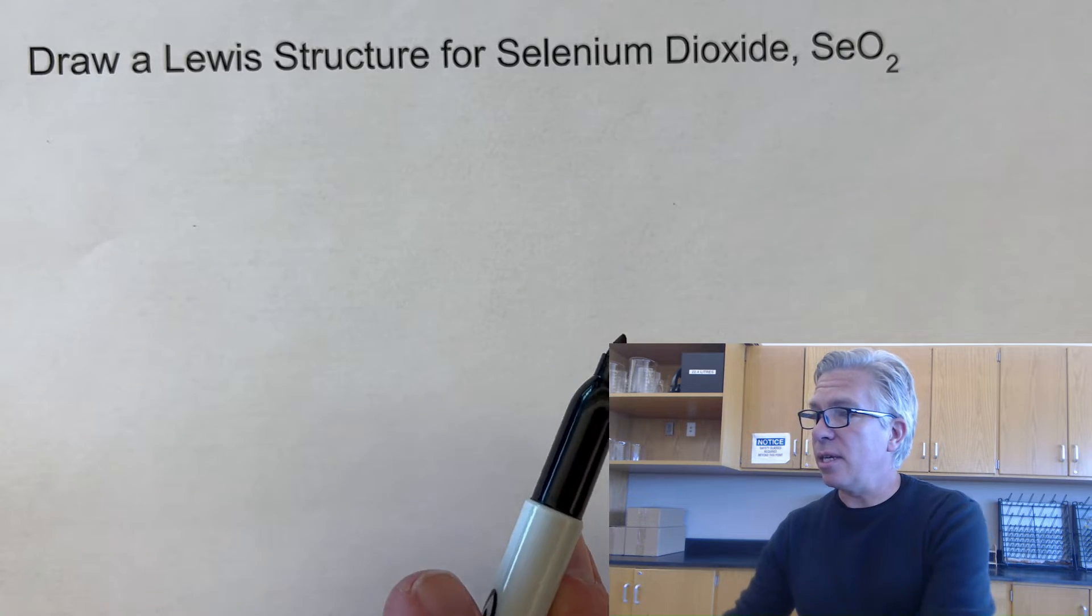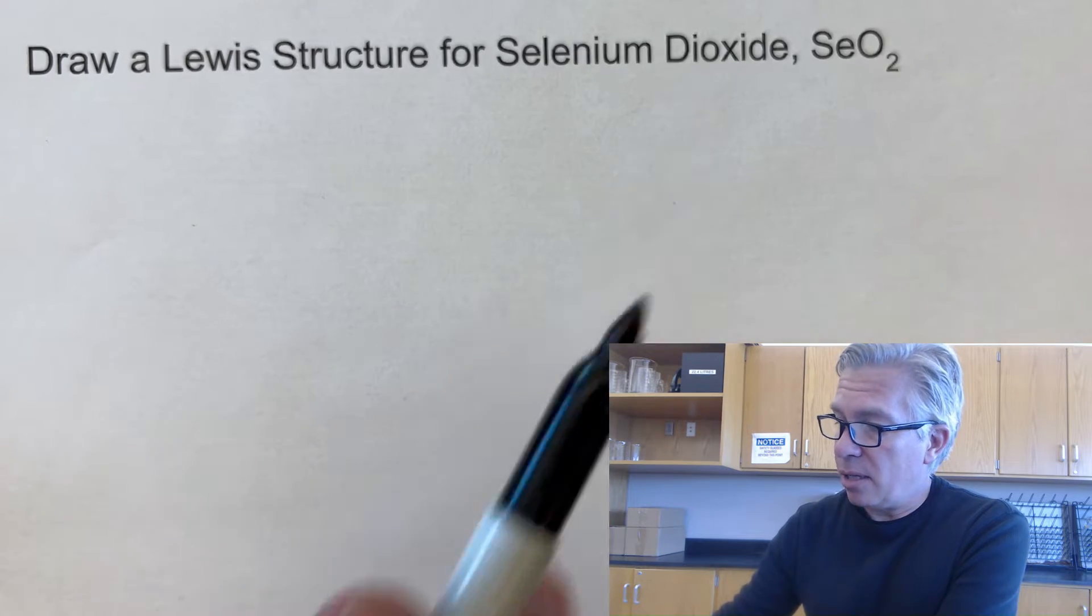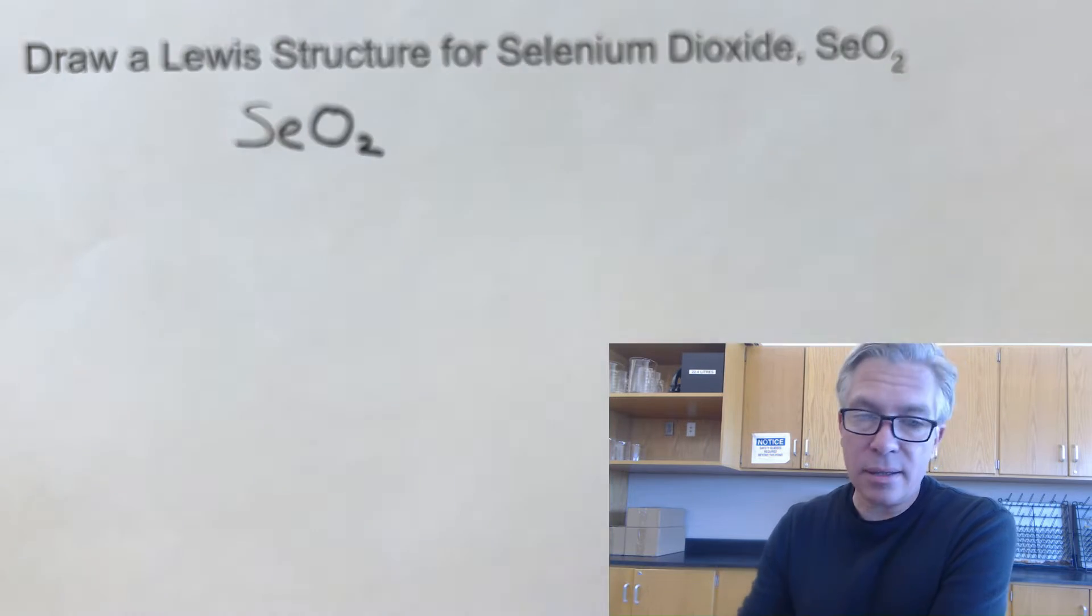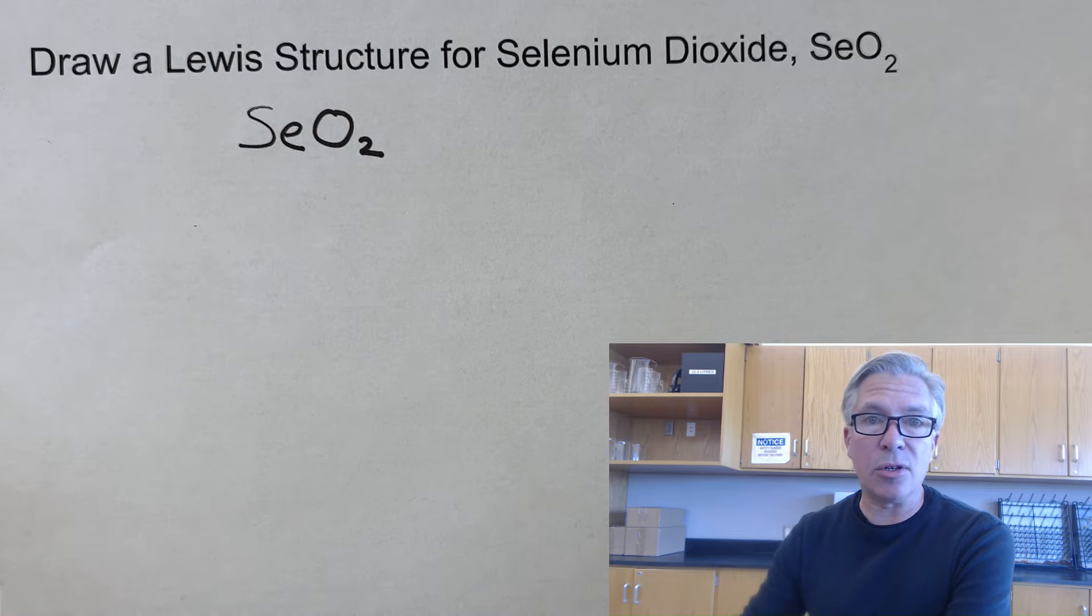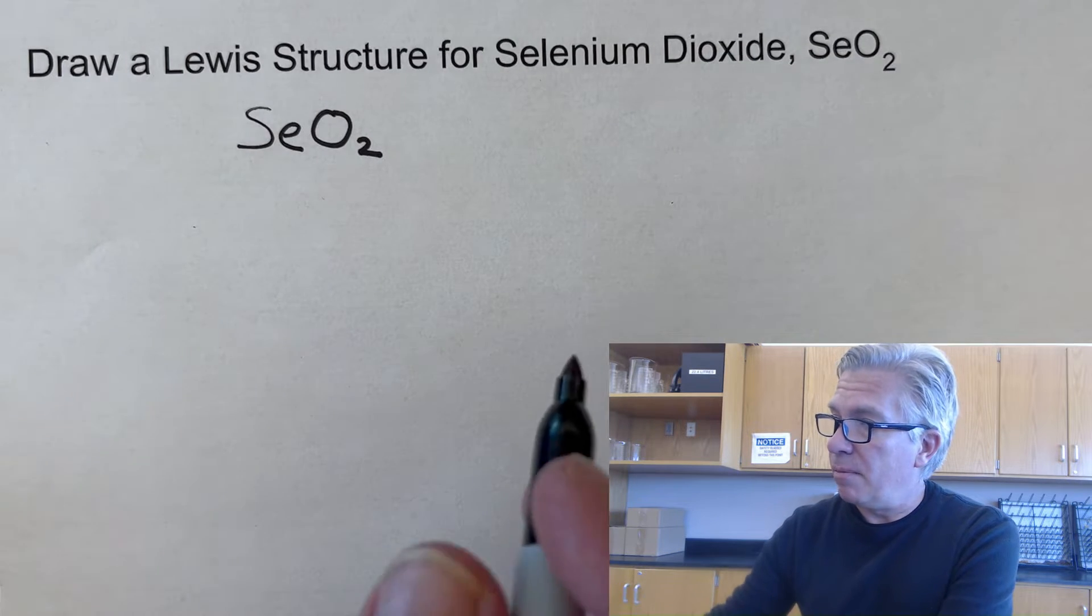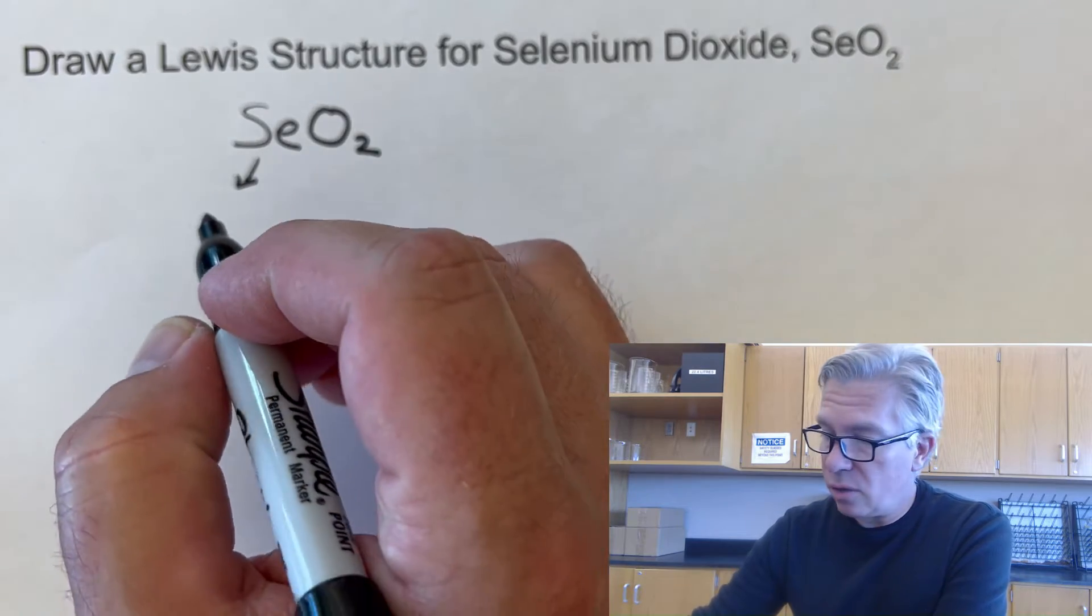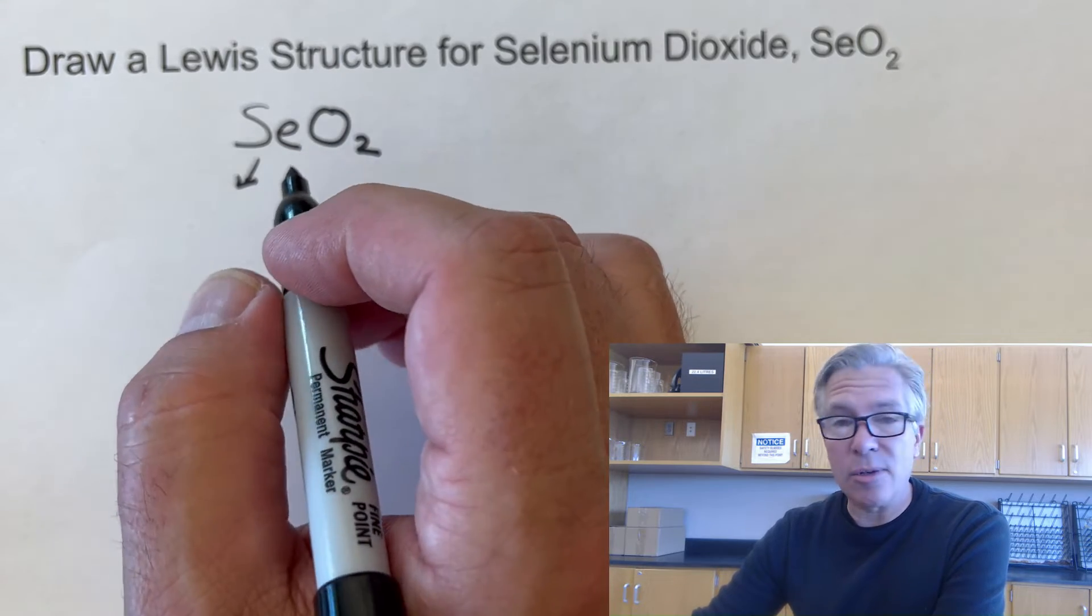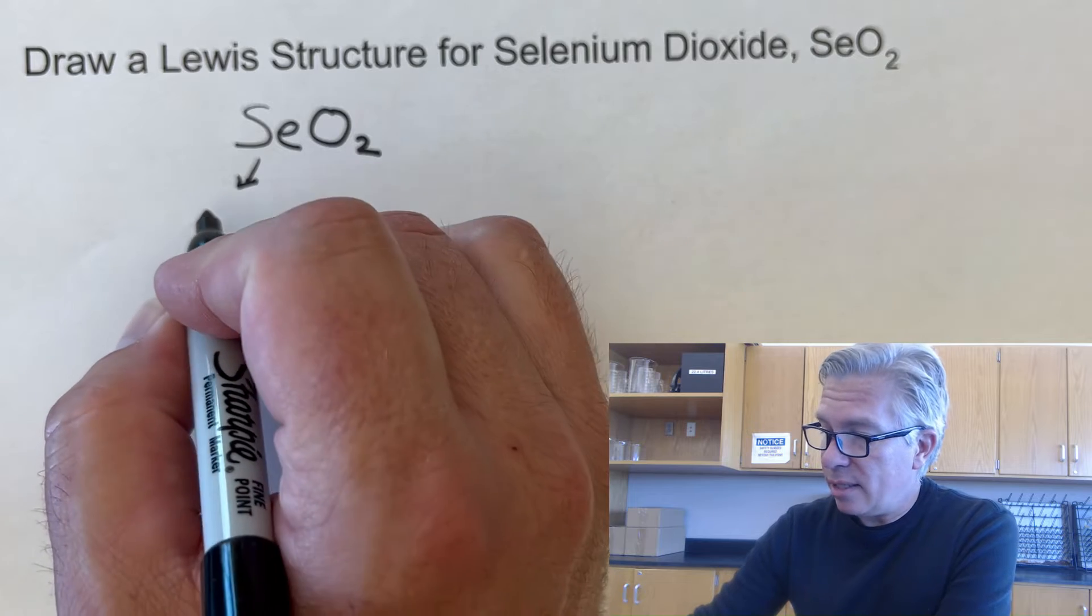My prompt here says selenium dioxide, SeO2, and that's the molecule we're going to draw. I'm going to be modeling the steps for drawing a Lewis structure. And if you want to review those steps, you can go back to the first video where I talk about them more in detail. But selenium dioxide, the first step you have to do is to add up the valence electrons. Selenium and oxygen are both in the same column of the periodic table, column 6, or 16 if you're doing the 1 to 18 numbering.